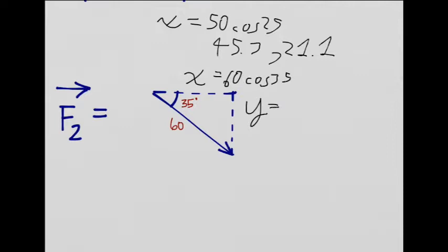And Y is, well, it's going down, so it will be negative 60 sine of 35. And so that will be about X is 49.1 and Y is negative 34.4.